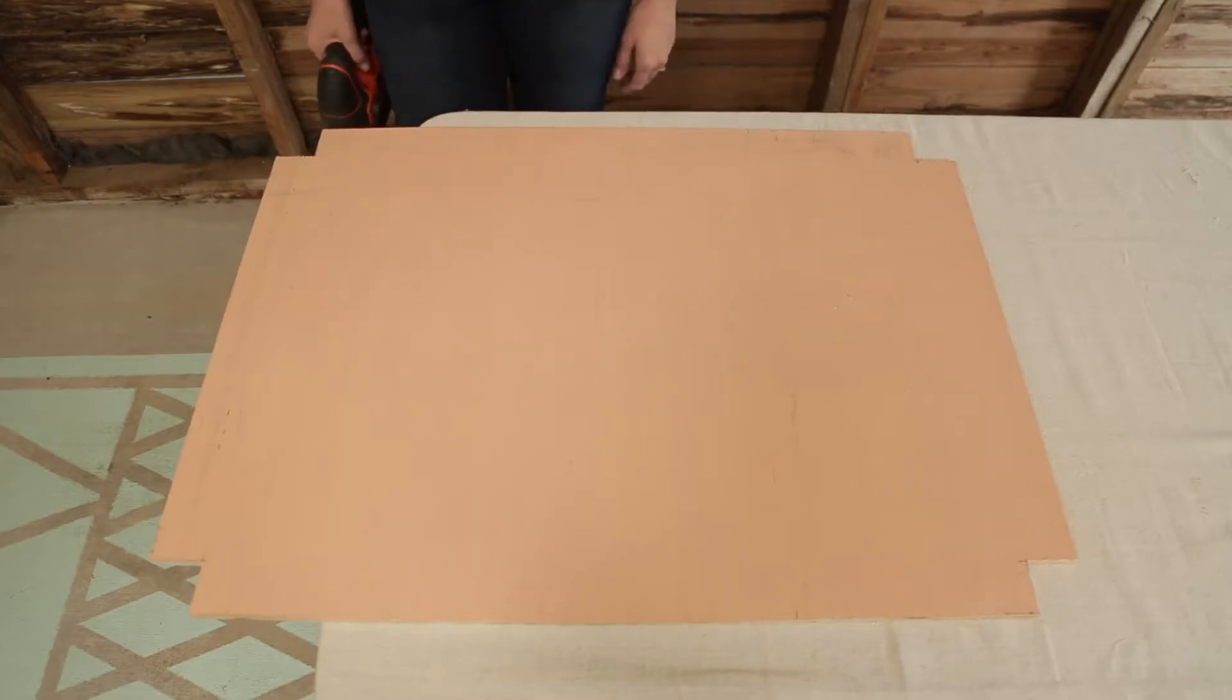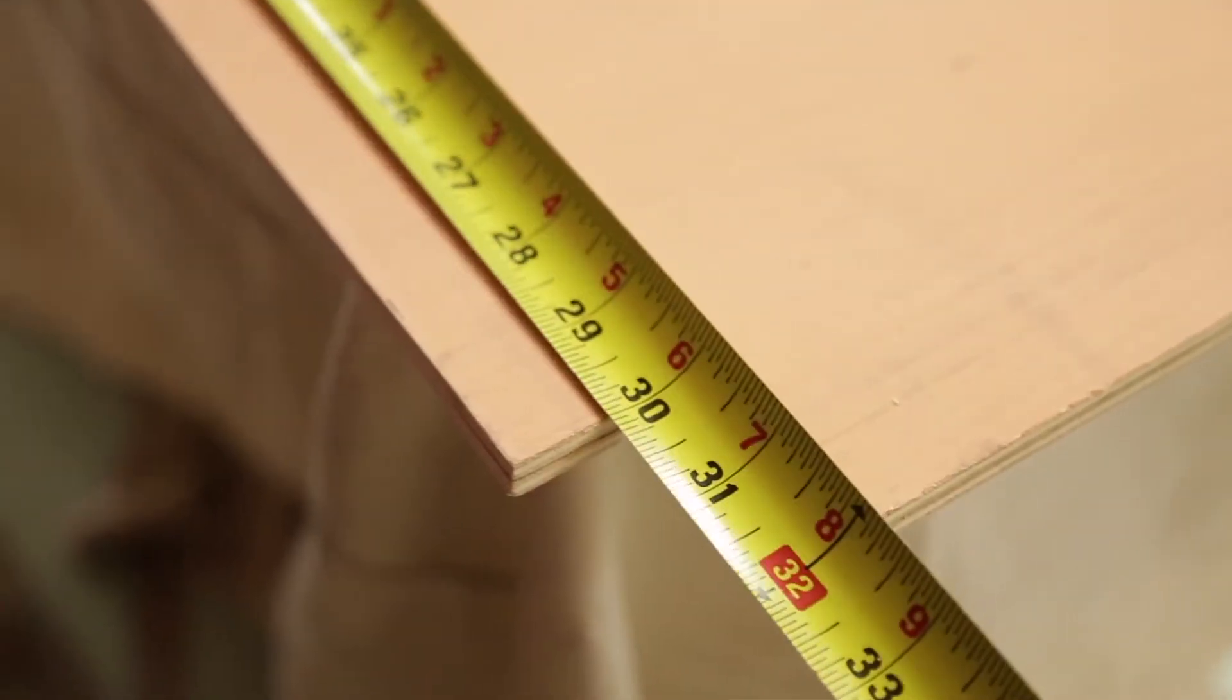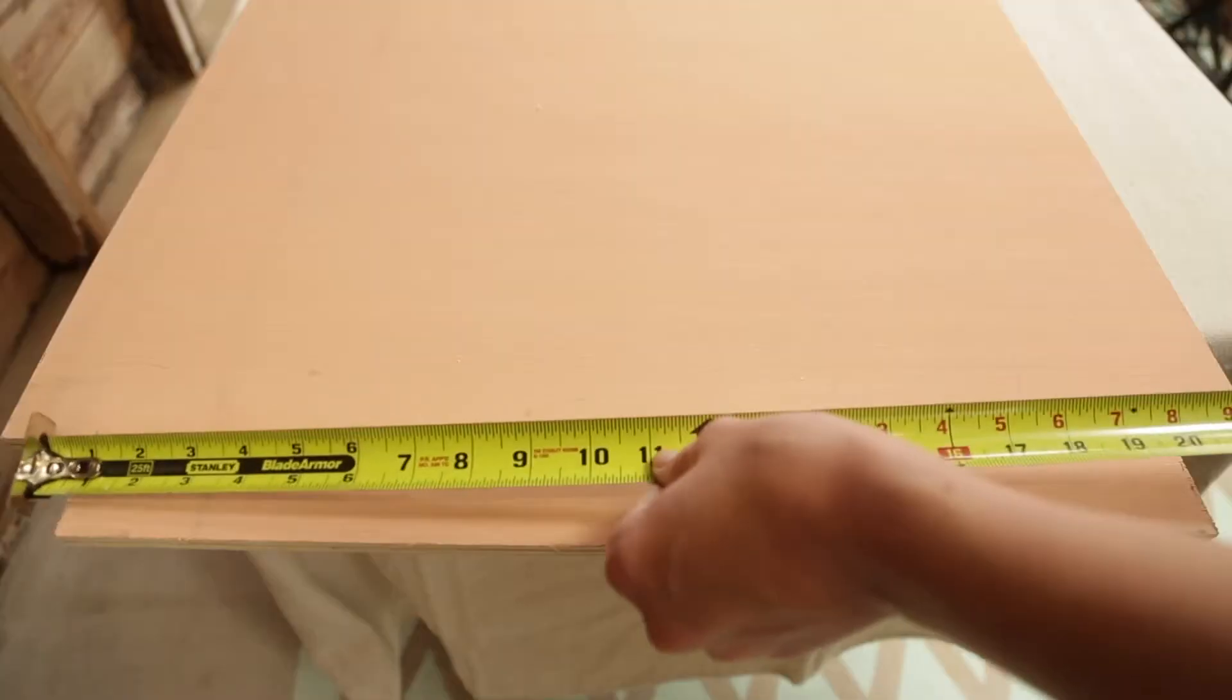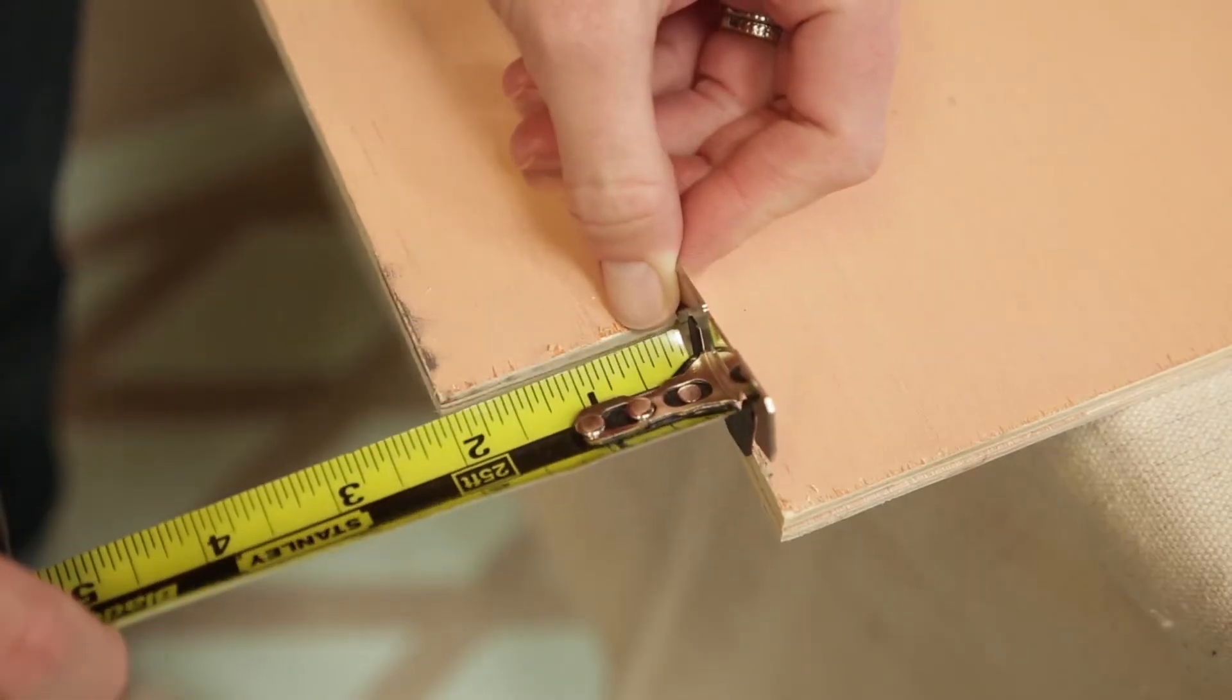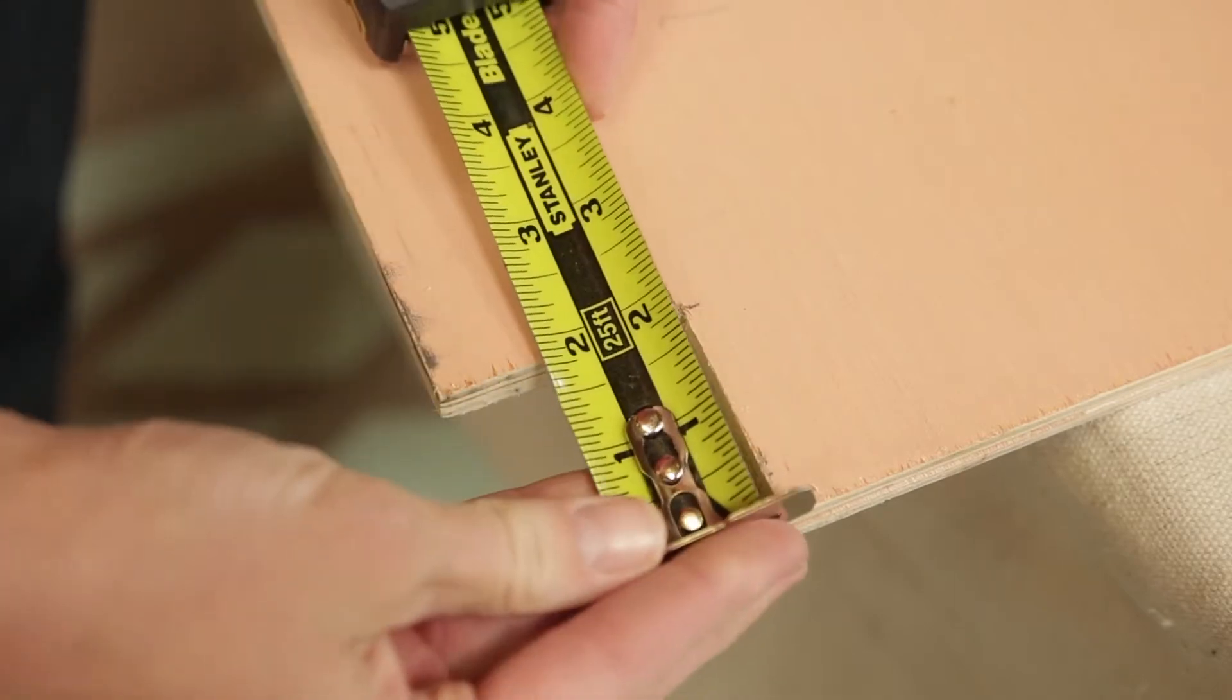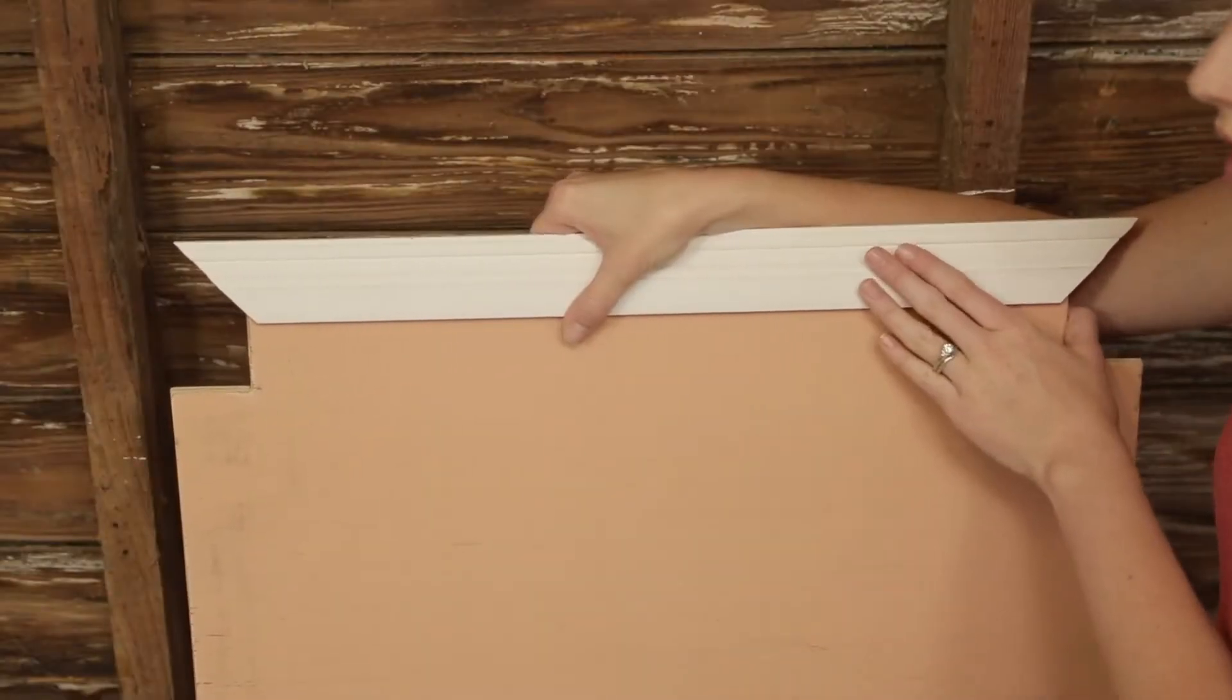I'm really liking this already. Now I just need to measure and cut my trim. My trim measurements are 30 inches for the two longest sides, 20 and a half inches for the shorter sides, and of course, two inches on the inside of each corner.